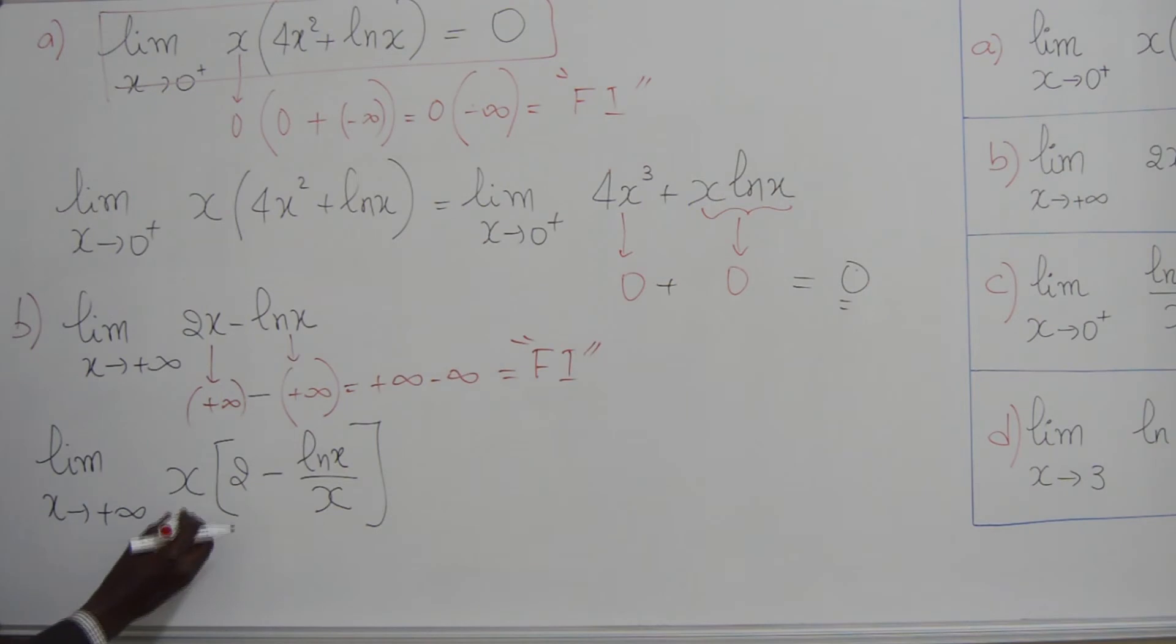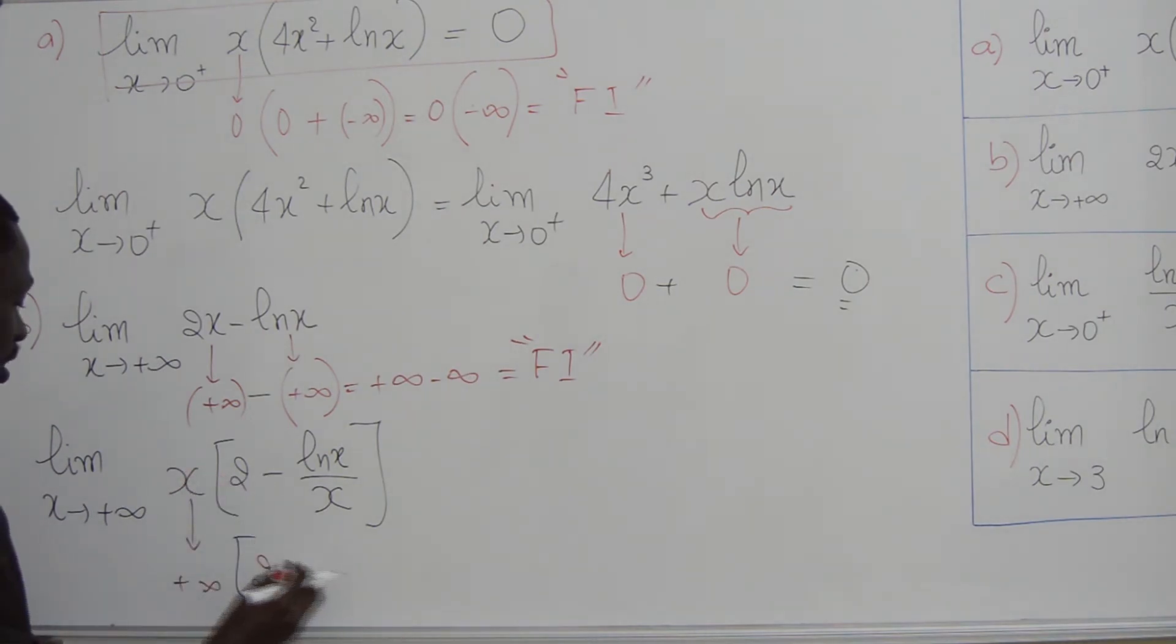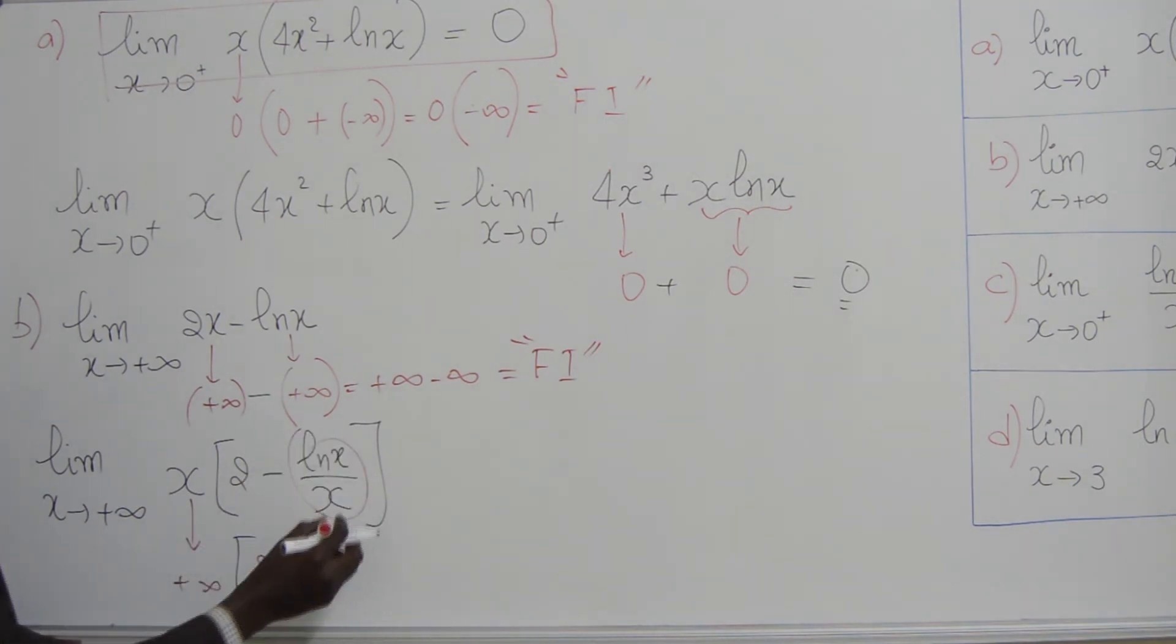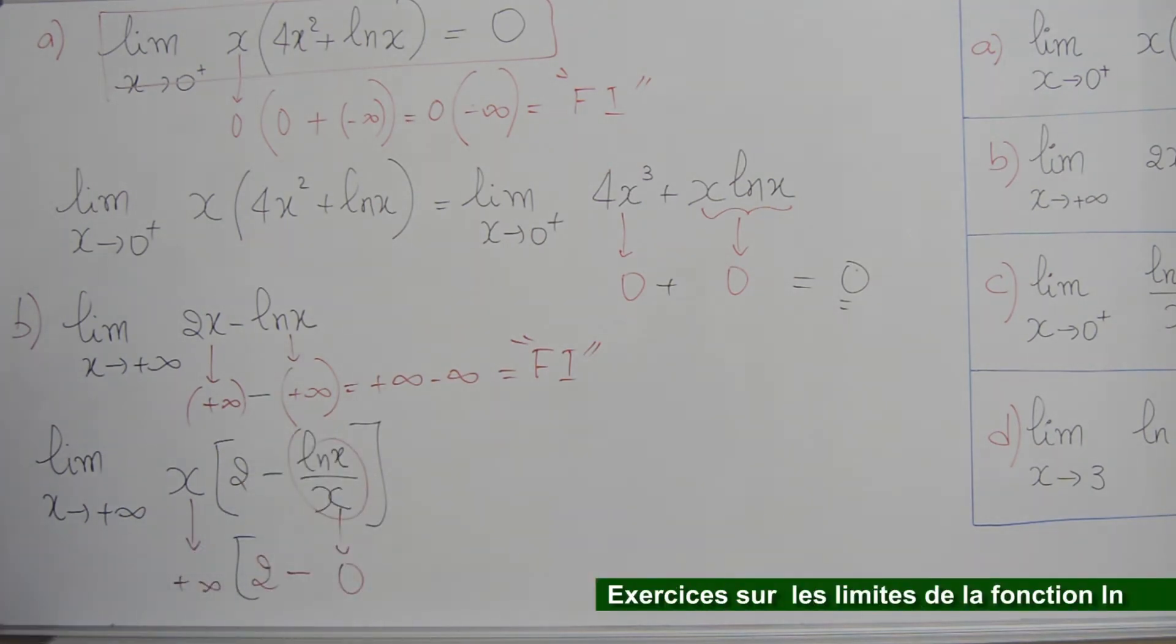On reprend les calculs. Lorsque x tend vers plus l'infini, facteur 2. Alors, on a 2, moins... Alors, ln2x sur x quand x tend vers plus l'infini, ça tend vers 0. C'est une limite usuelle.